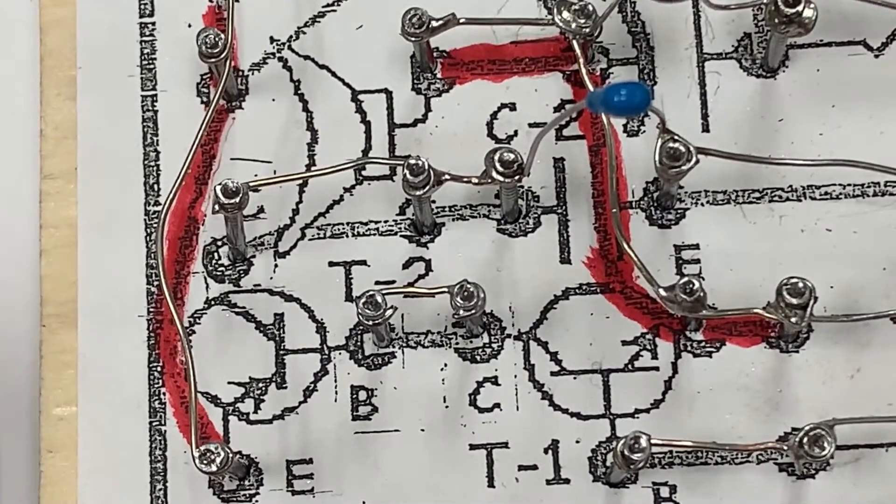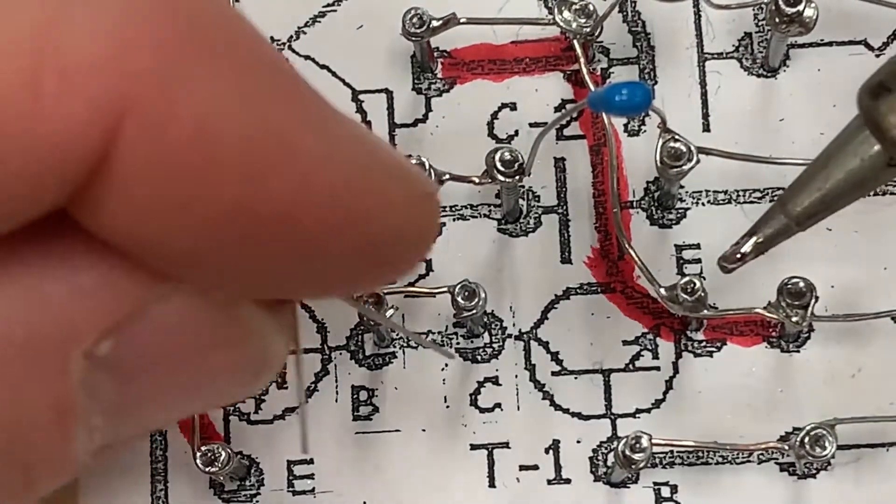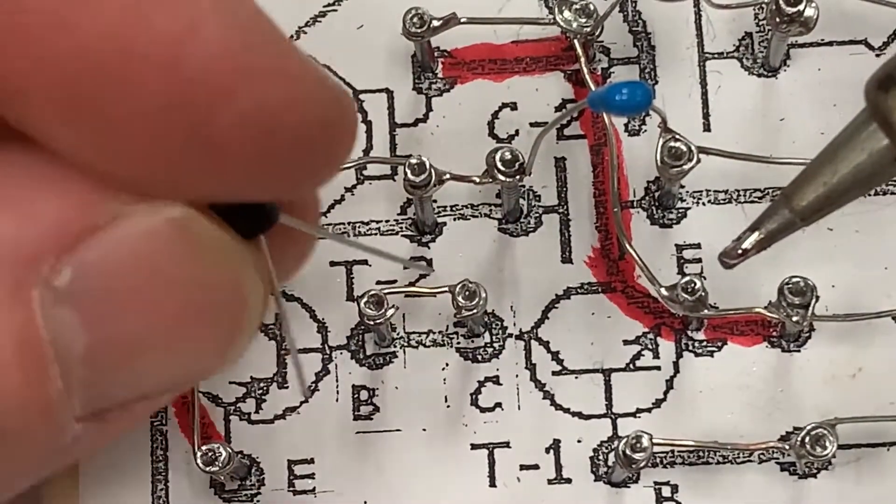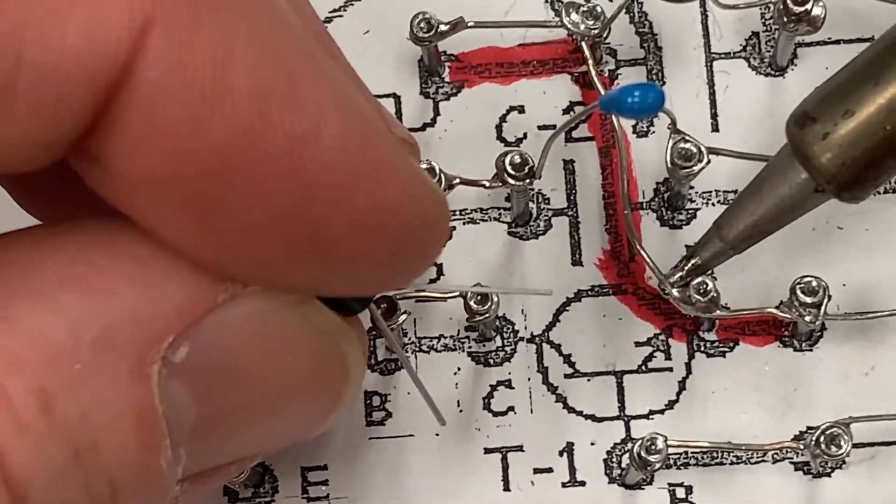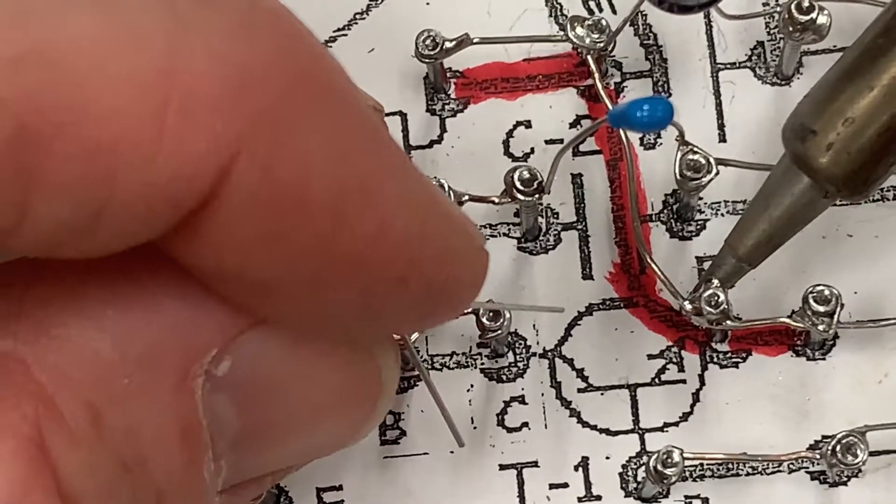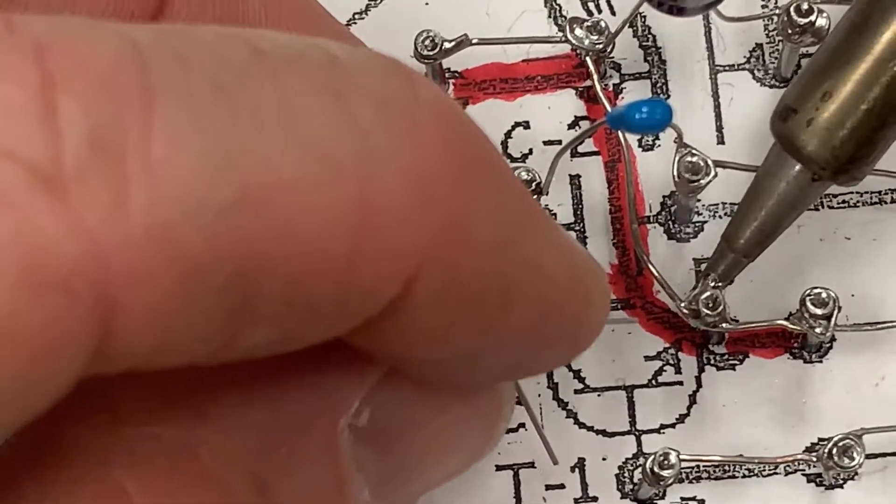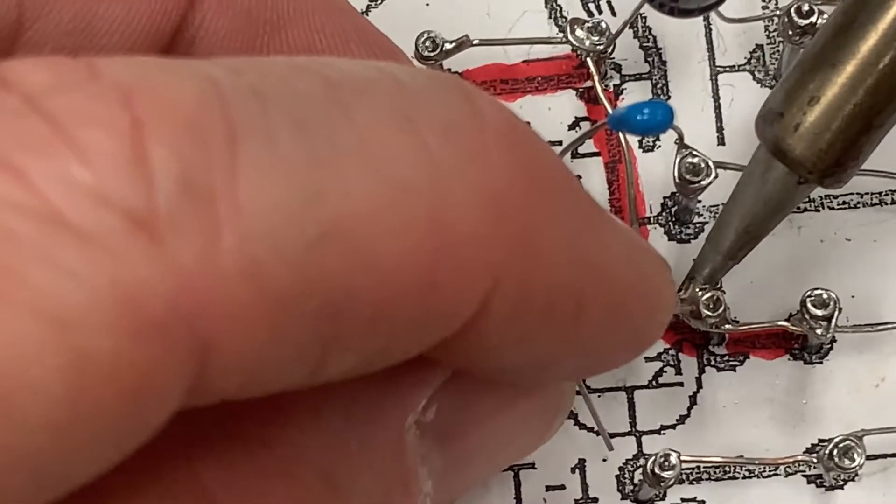So what we're doing is looking for which one of the three nails has some extra solder on it so we can connect one of the legs there. I can see that on the letter E nail, there's some solder, and so I'm going to take my soldering iron and heat that up.